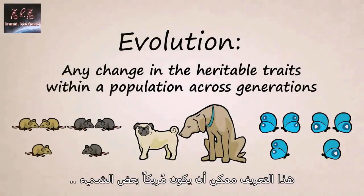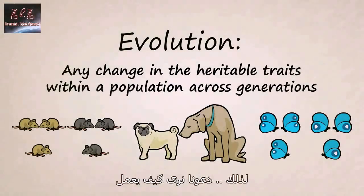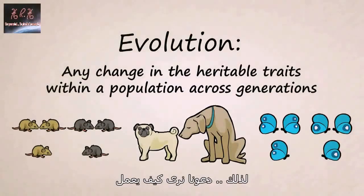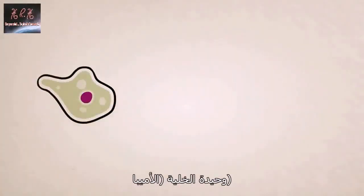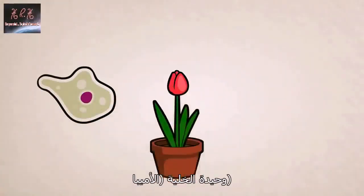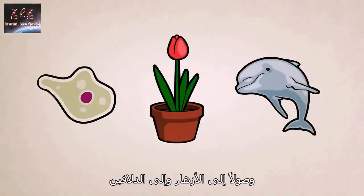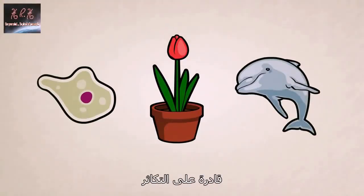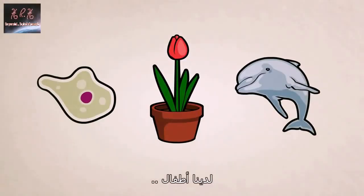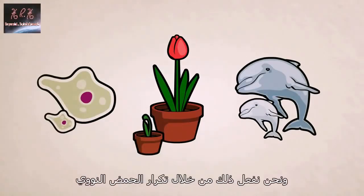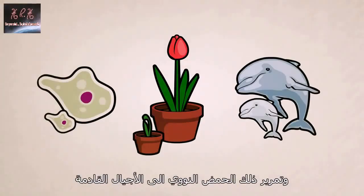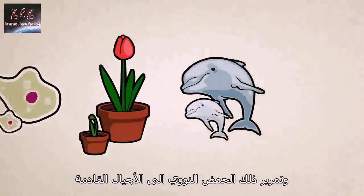This definition can be a bit confusing, so let's see how it works. All healthy living things, from single-celled amoebas to flowers to dolphins, are capable of reproduction. We have children; we make copies of ourselves. We do this by duplicating our DNA and passing that DNA on to future generations.